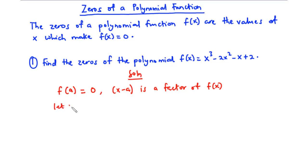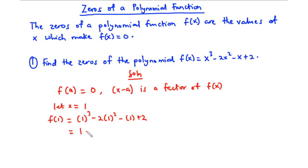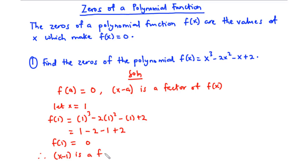Let x = 1. Then f(1) = 1³ - 2(1²) - 1 + 2. So 1 cubed is 1, 1 squared is 1 times negative 2 is negative 2, minus 1 plus 2. We have 1 minus 1 which is 0, and negative 2 plus 2 which is also 0. So f(1) = 0, which means x - 1 is a factor of f(x).